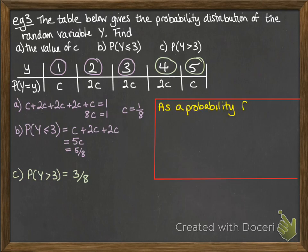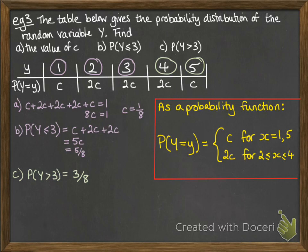You might also be asked to talk about or understand a probability function. So if we were displaying this, this here is a probability distribution table. If we wanted to write it as a probability function, it would look like this. So we're told that it's c for all values of x, where x is 1 and 5. And any value of x between 2 and 4 gives us an answer of 2c. So it's just an alternative way of writing the information in that table, but using function notation instead.